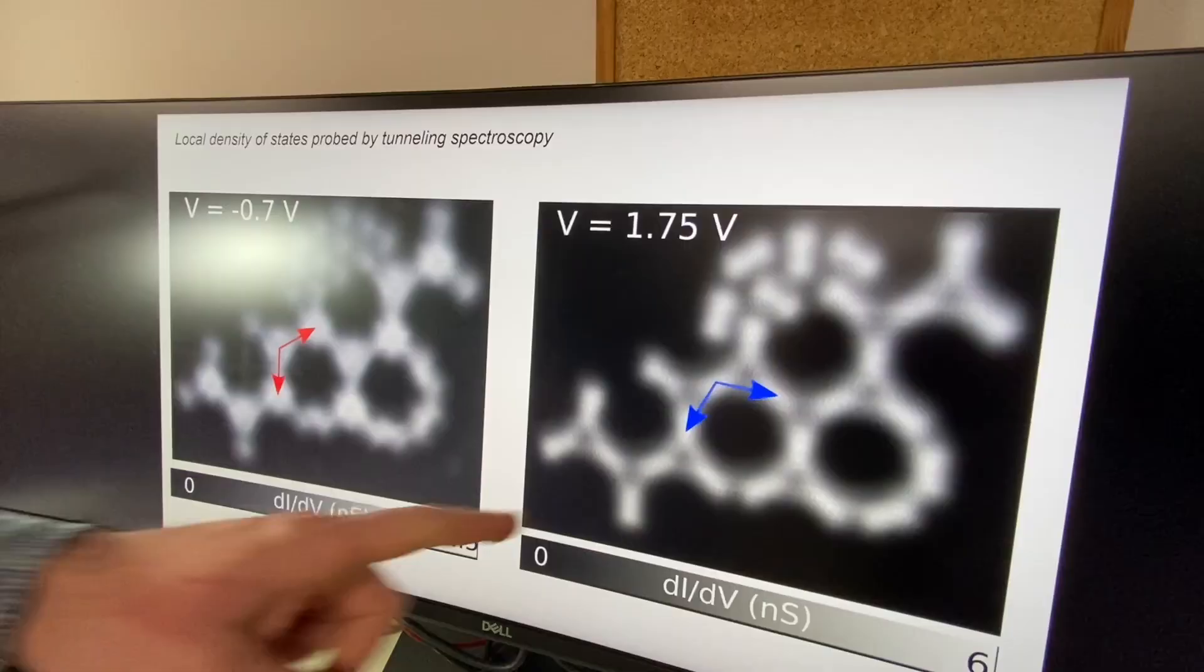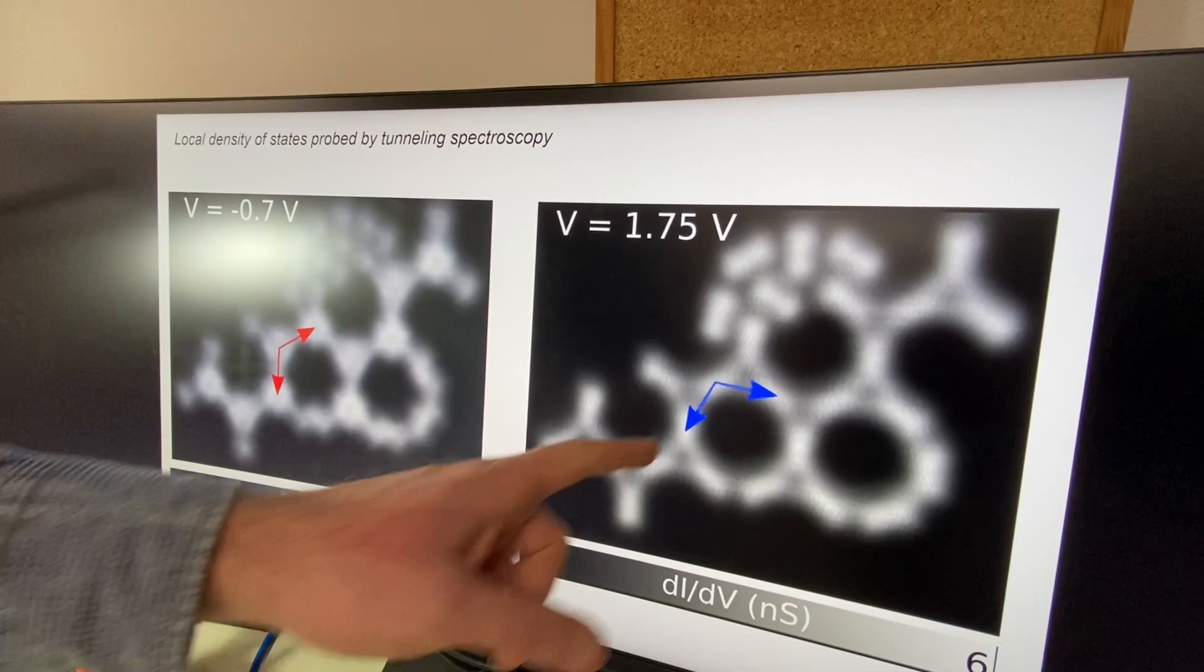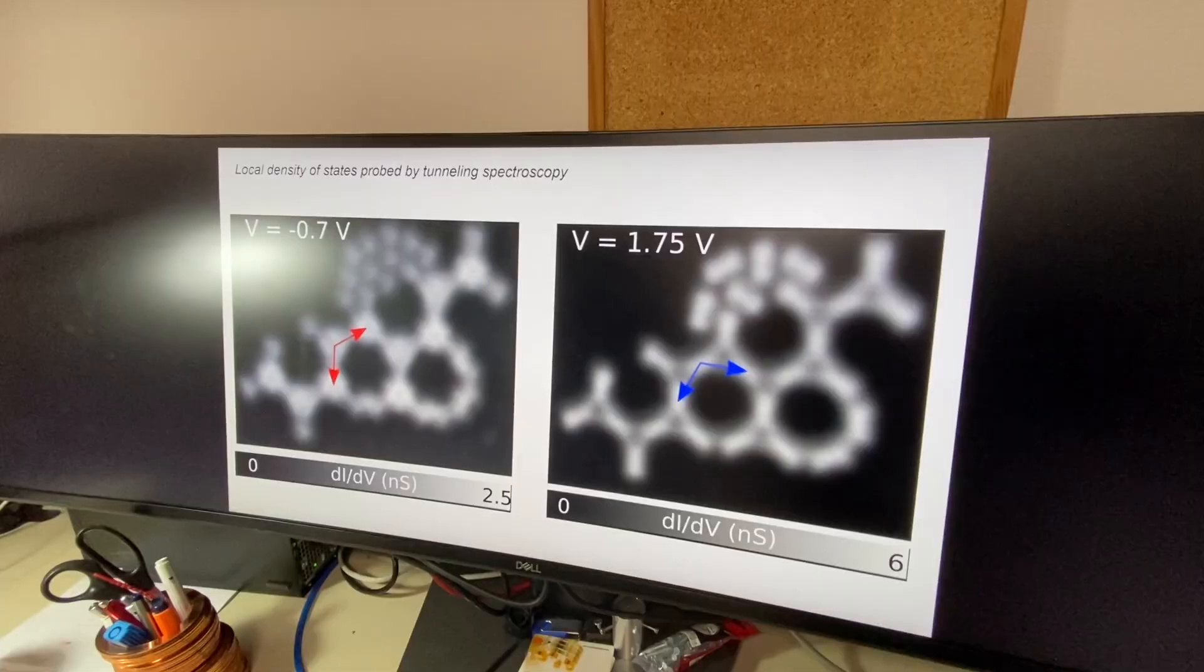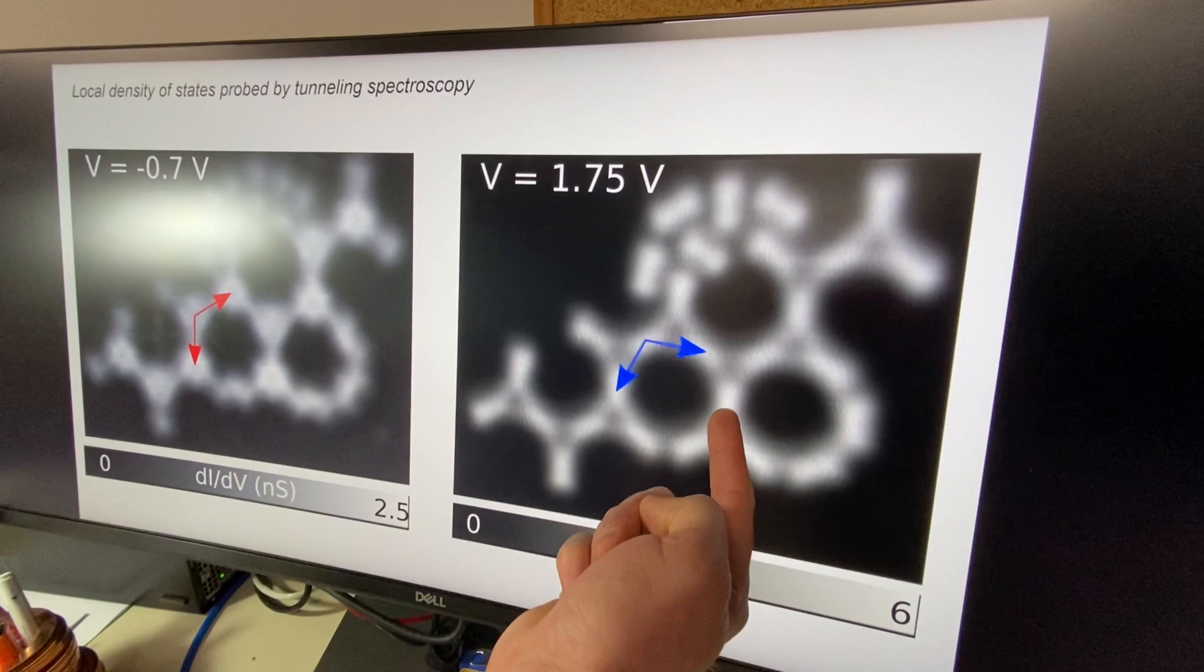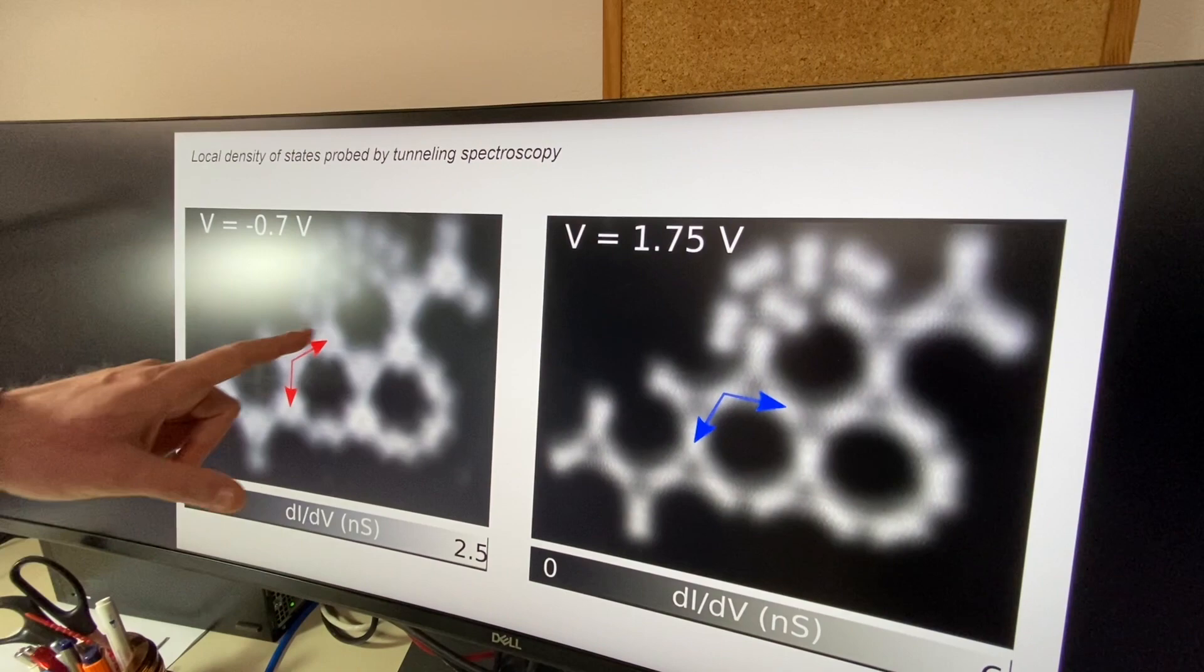Then we use scanning tunneling microscopy to characterize its electronic properties on the surface. We found out that electrons are trapped at the Kagome sites with a well-defined energy, which is in contrast with normal graphene where electrons are usually delocalized over the structure. This is what we can see for other energies.